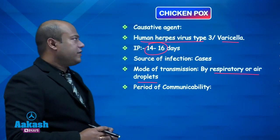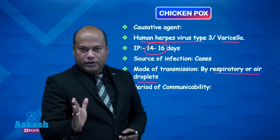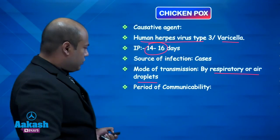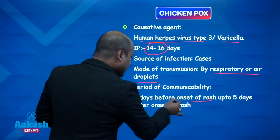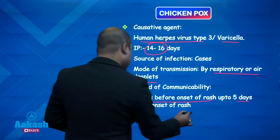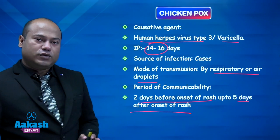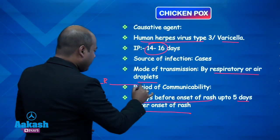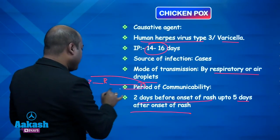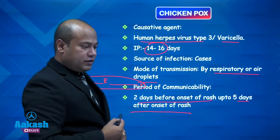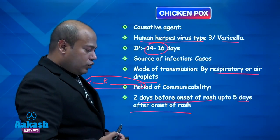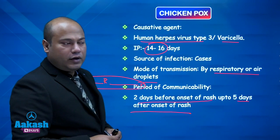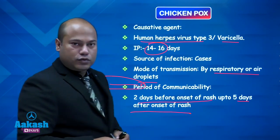The period of communicability is very important: chickenpox is communicable two days before the appearance of rash and up to five days after the appearance of rash. So if we consider the rash in the middle — two days before and five days after — the total period of communicability is one week. That is why children with chickenpox are asked to avoid school for one to two weeks.